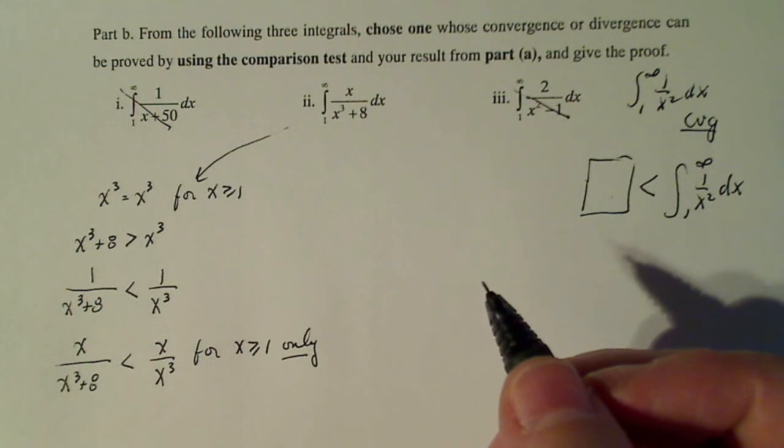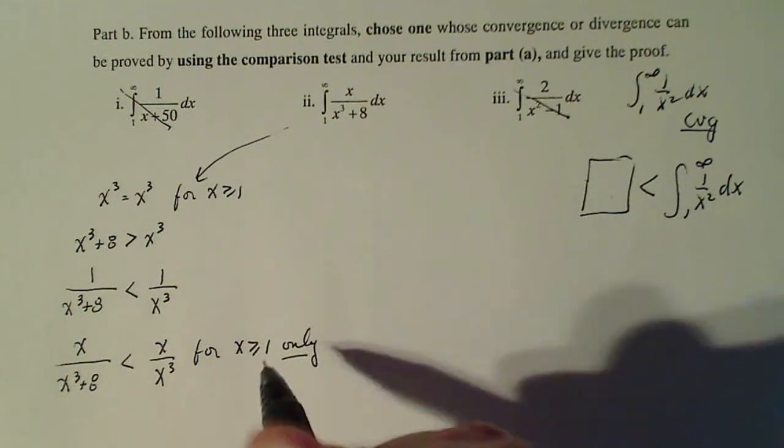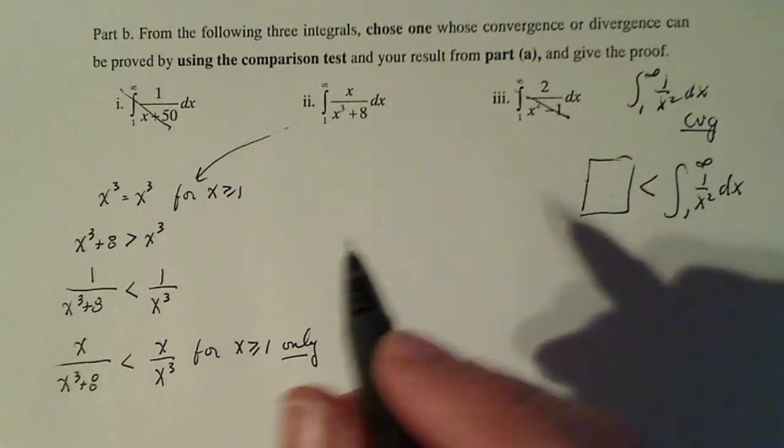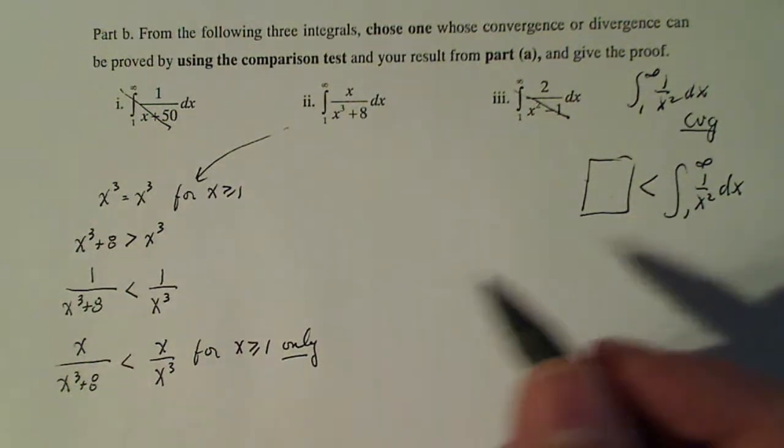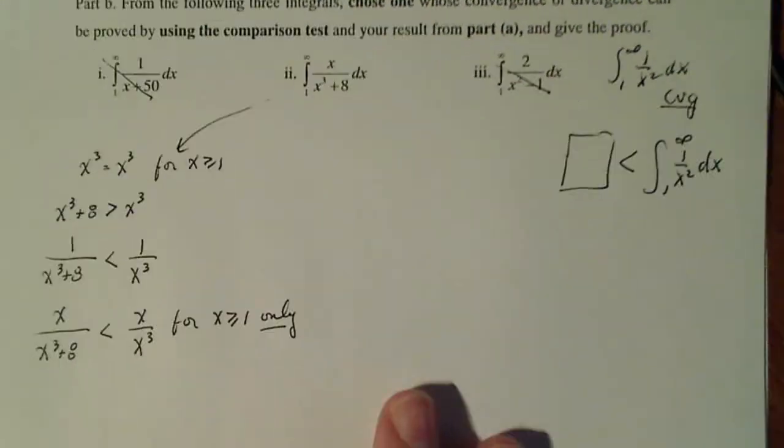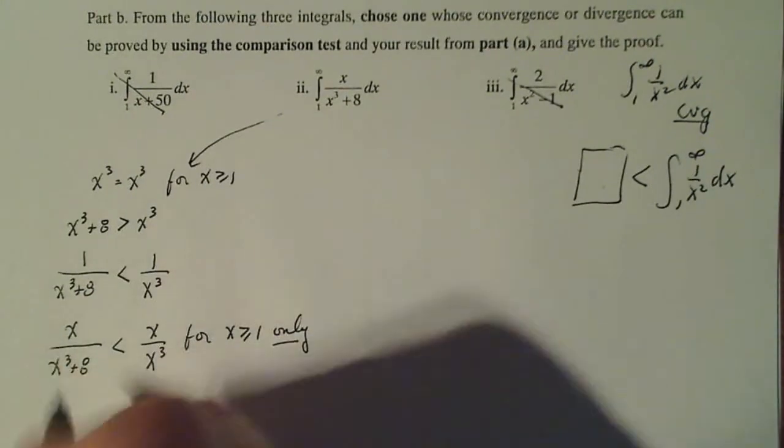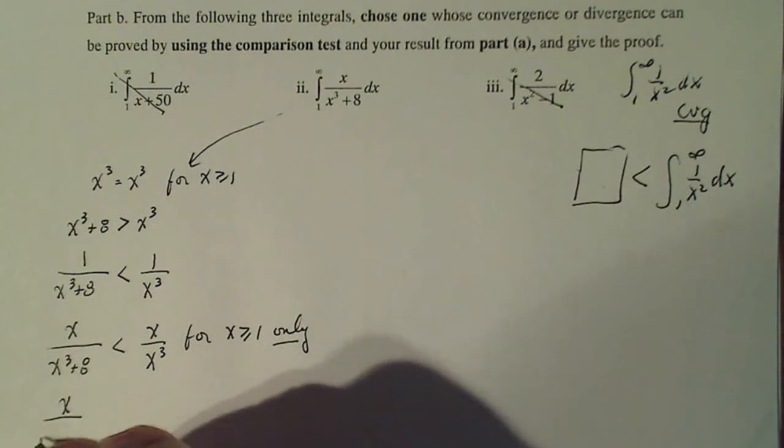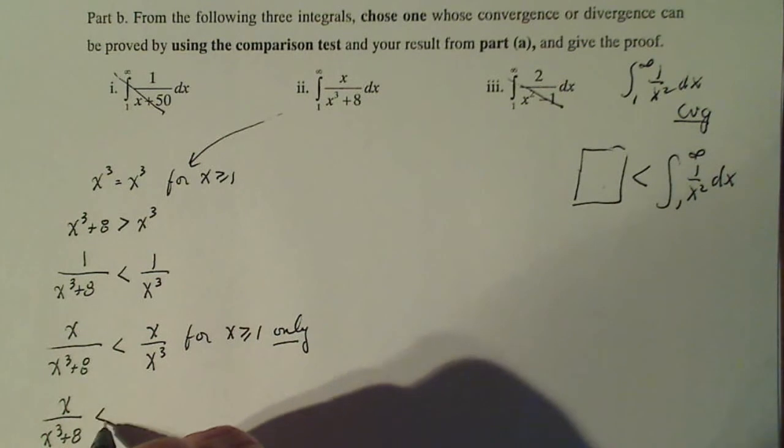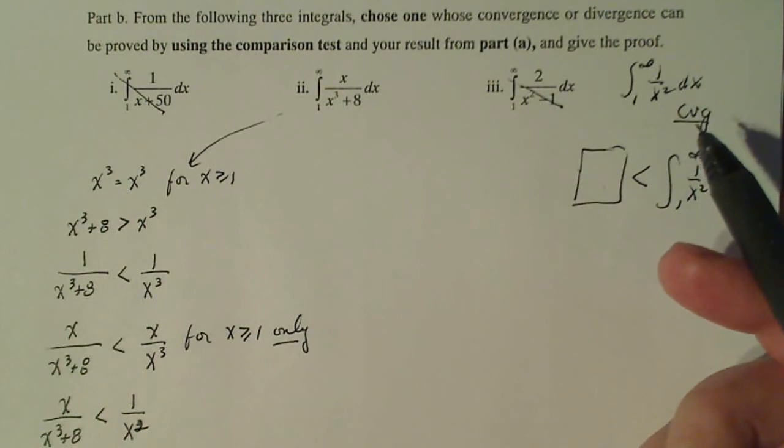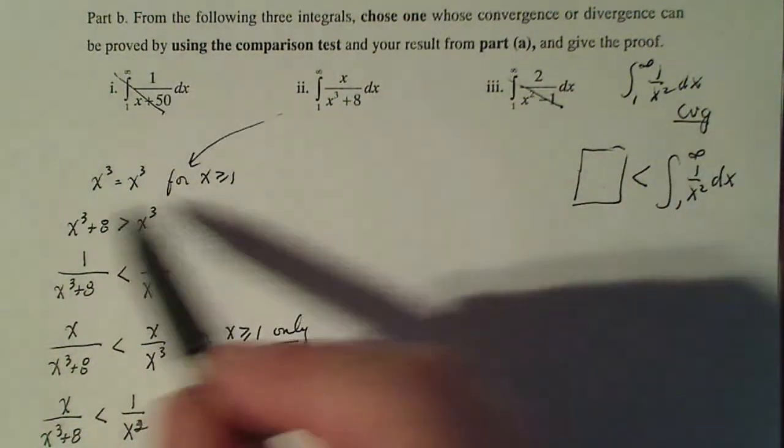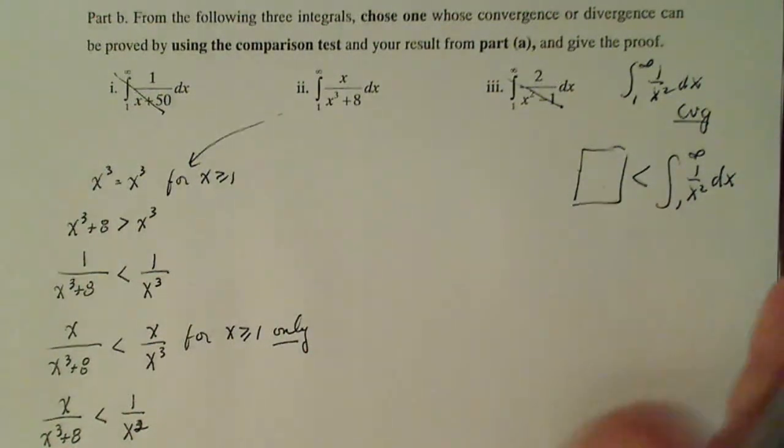And the only reason why this is okay, this is okay for x greater than or equal to one only. If x is between zero and one, it works okay. But right now we know it works for x greater than one. It doesn't work for x less than zero for sure. Now, one more step I'm going to do here, which I didn't do before, but this side looks like the integrand I'm interested in up here at the top. Now, I'm going to simplify this. So this looks like the integrand that I used in part A.